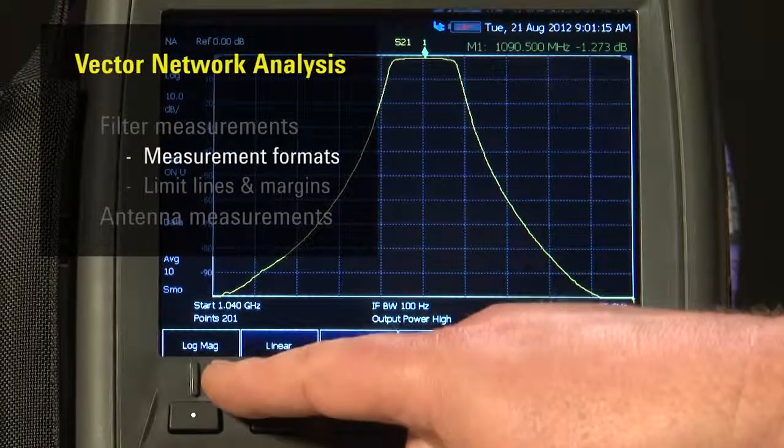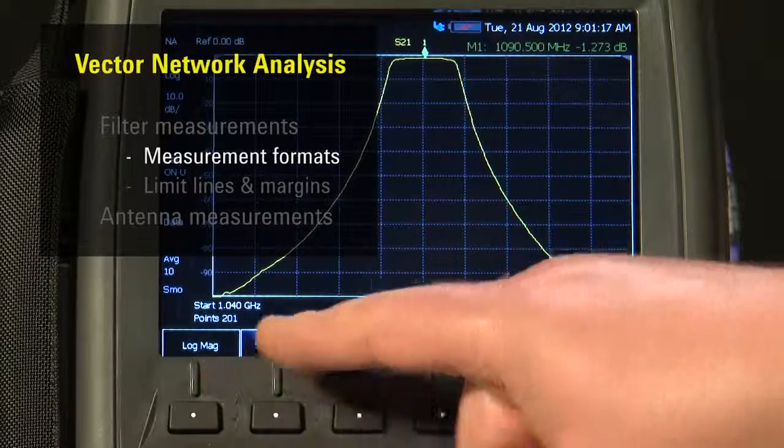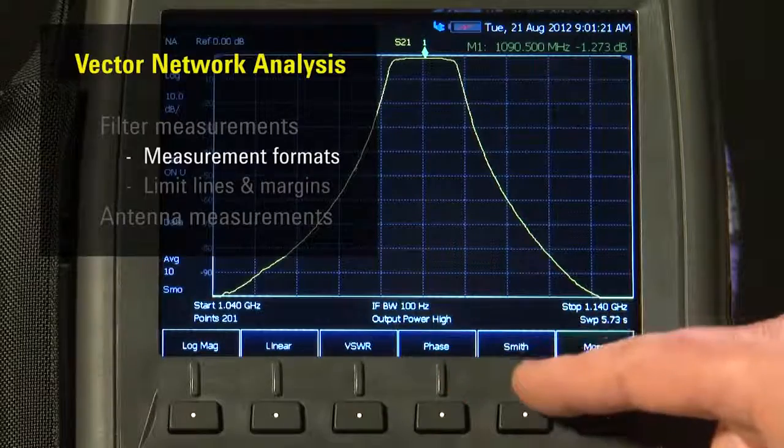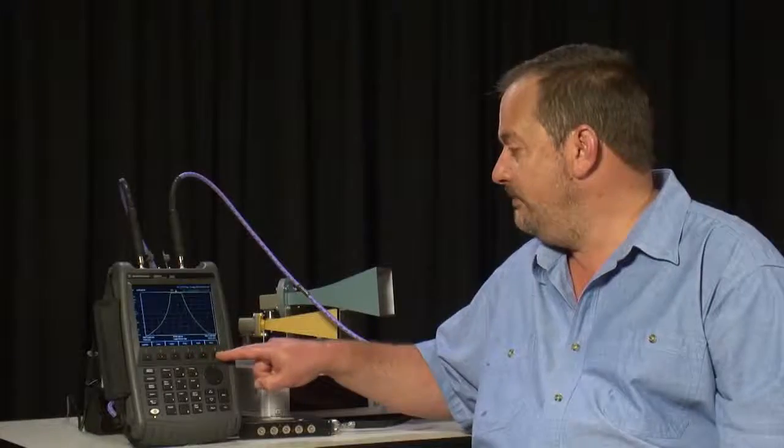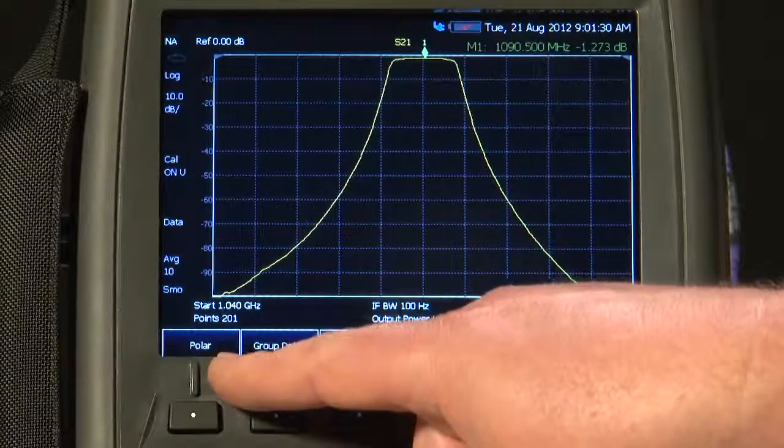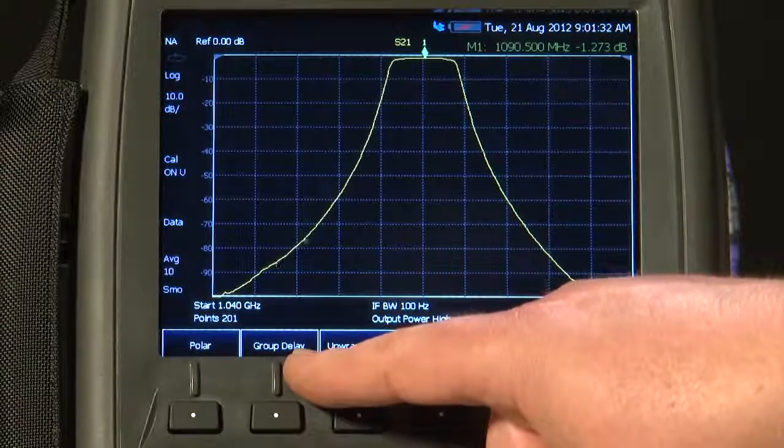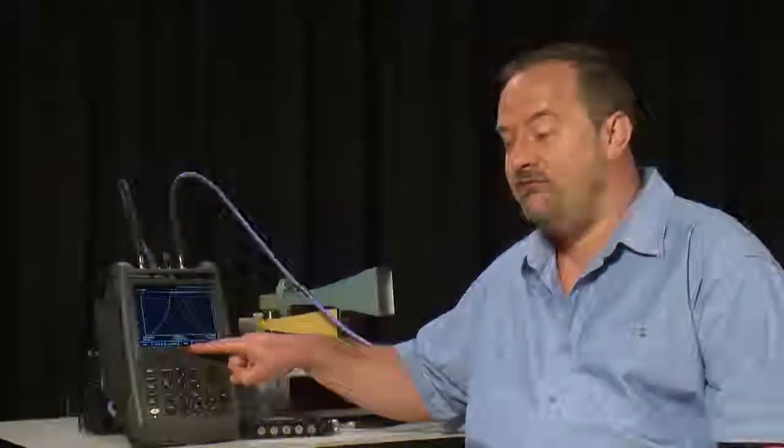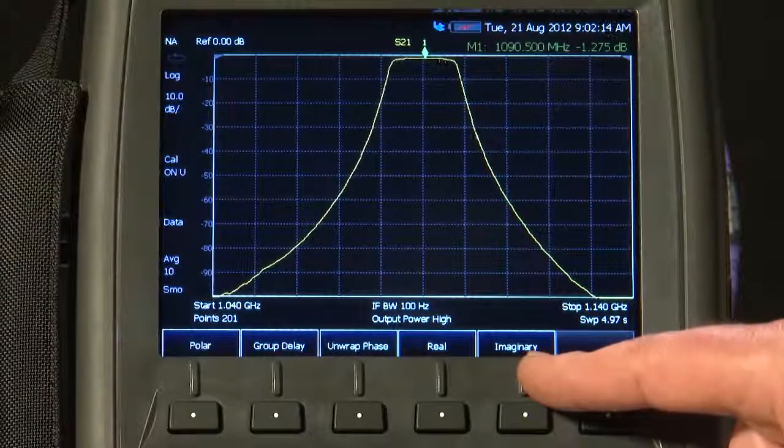We could measure Log Mag as we are at the moment, Linear, VSWR, Phase, a Smith Chart. If I press More, we could look at a Polar Diagram, measure the Group Delay through the Filter, the Unwrapped Phase, or just look at the real and imaginary parts of the filter's insertion loss.